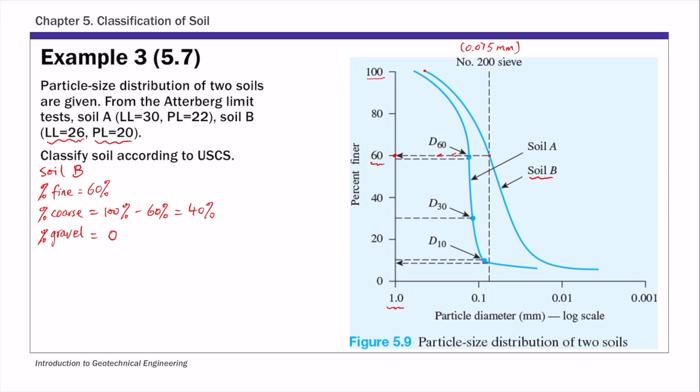And so gravel is anything larger than 4.75, so gravel is particles larger than 4.75 millimeter, and of course smaller than 76.2 millimeter. So we have 0% of gravel, so 100% of soil is smaller than 1.0 in this soil.